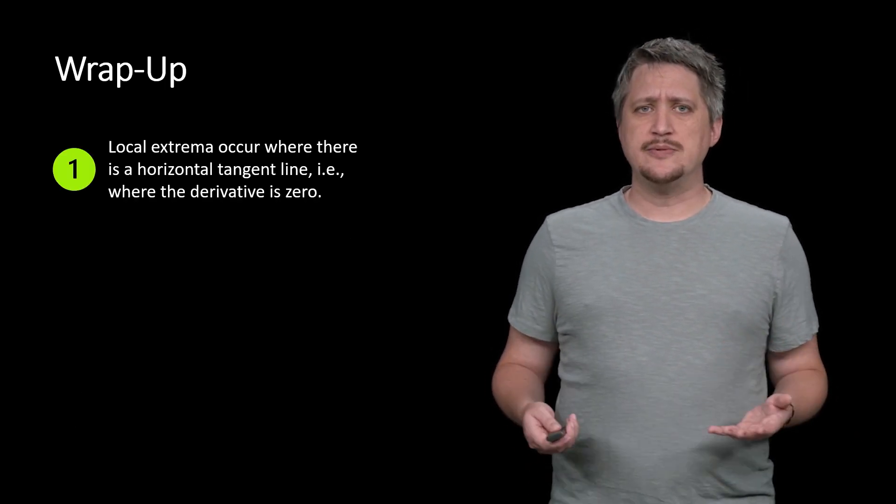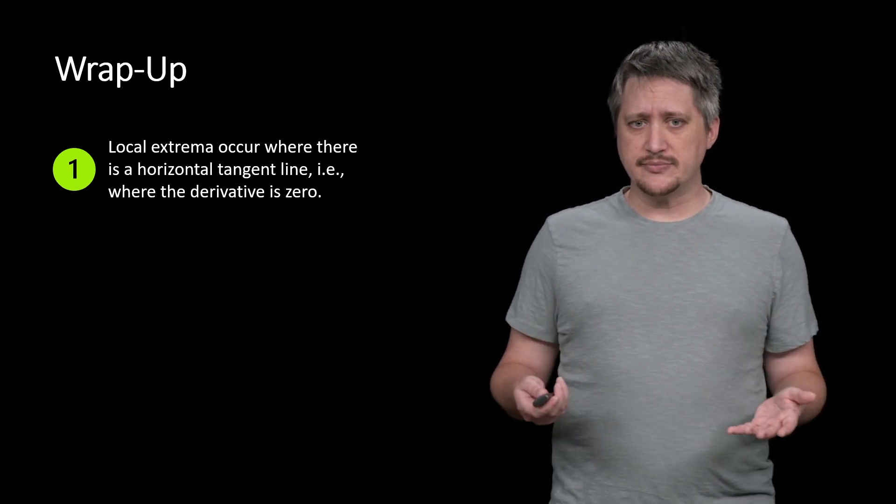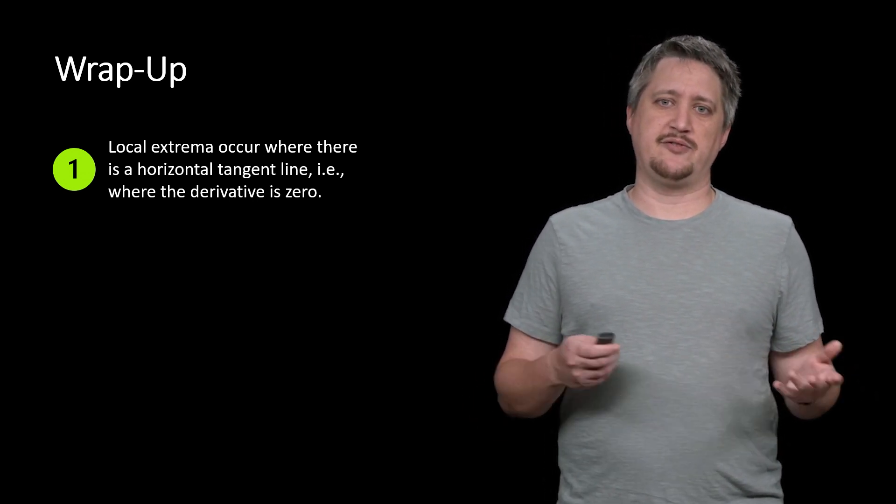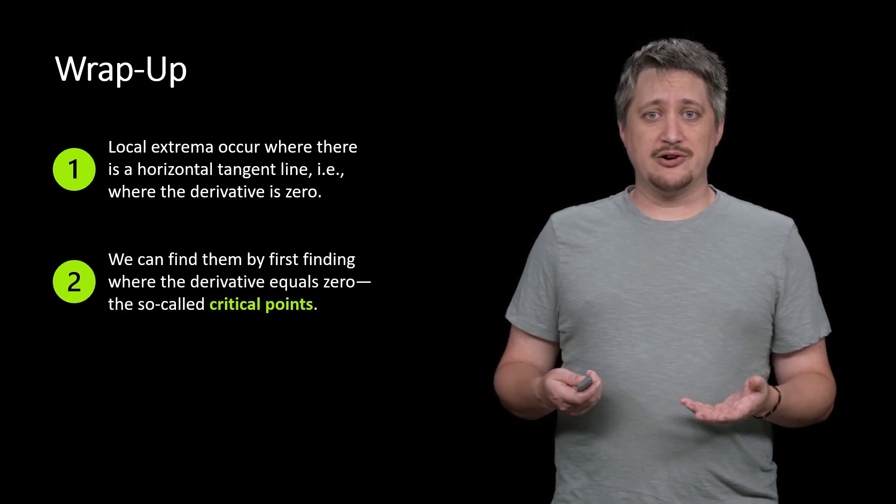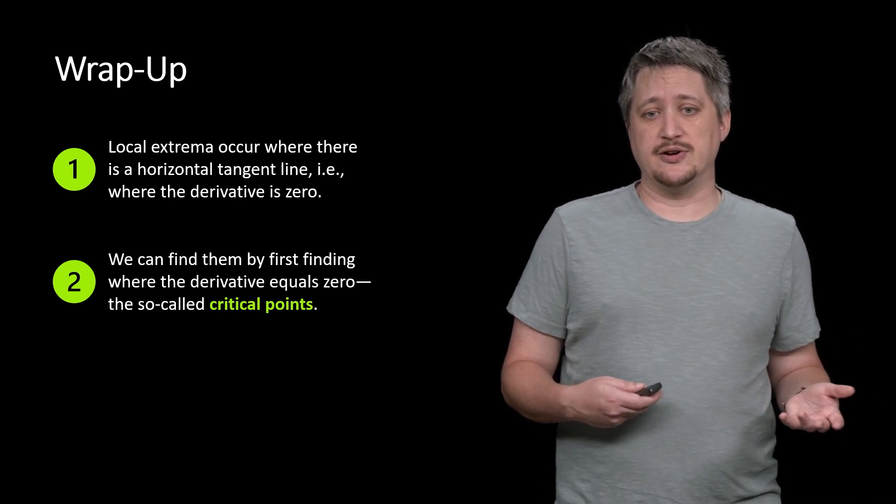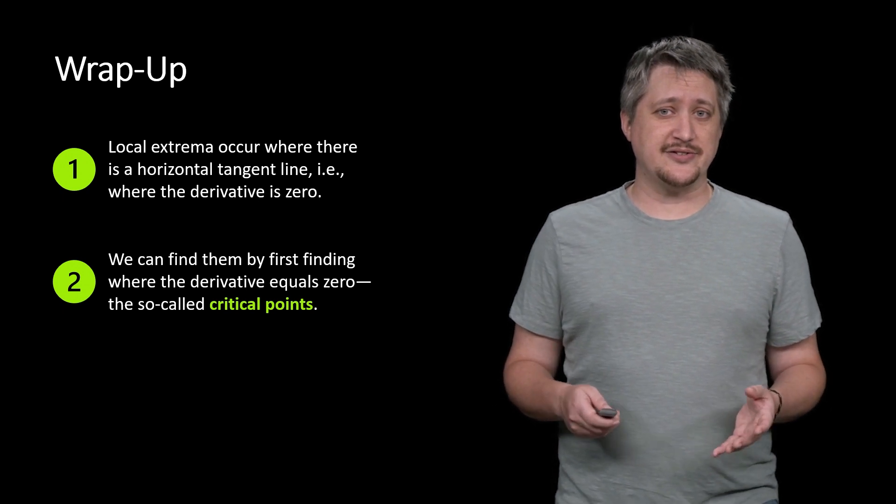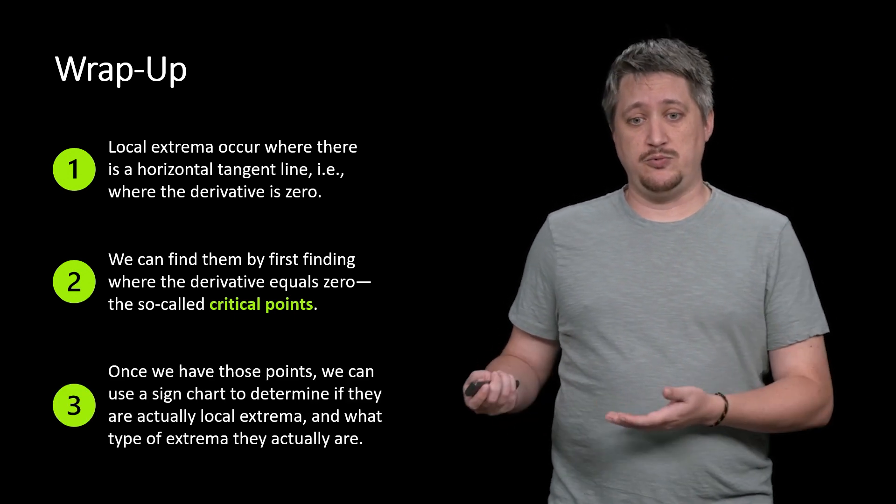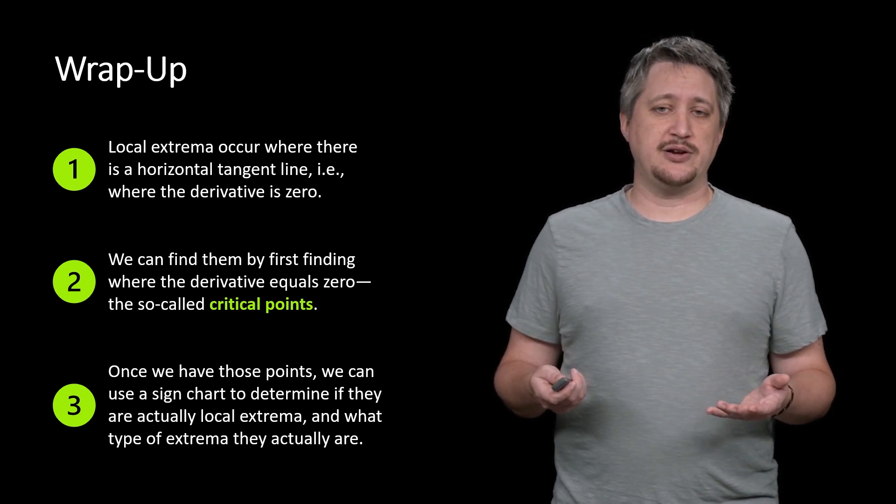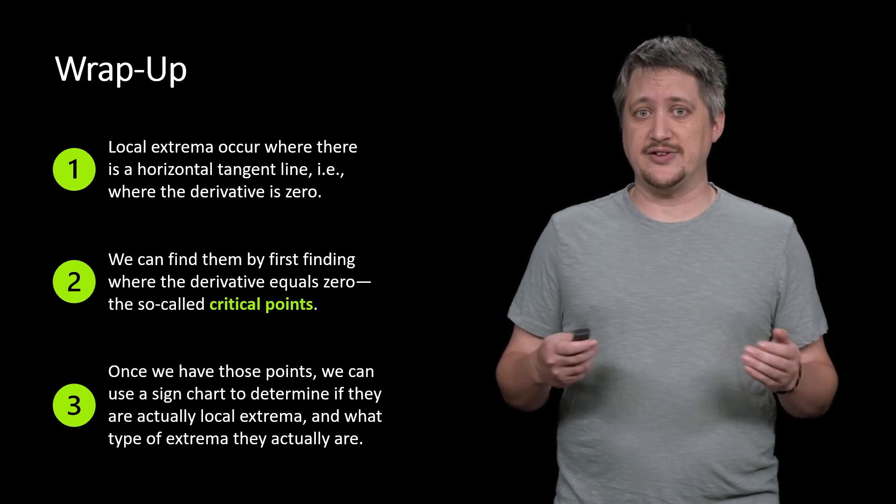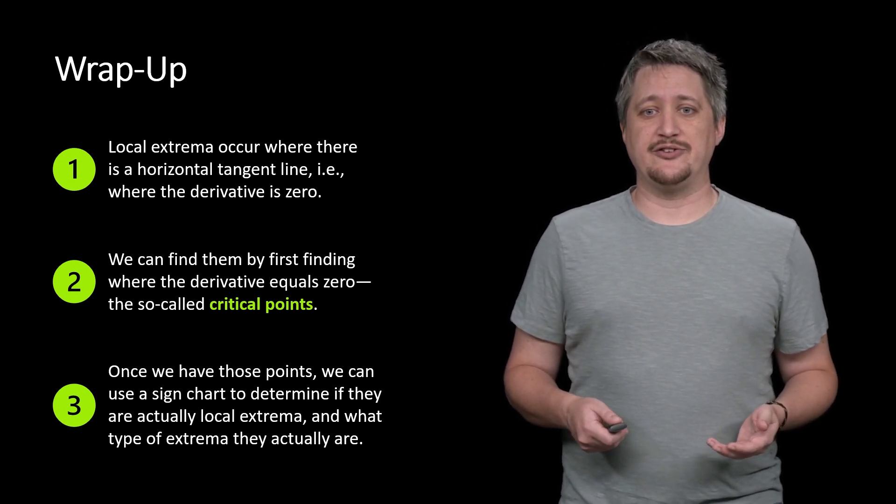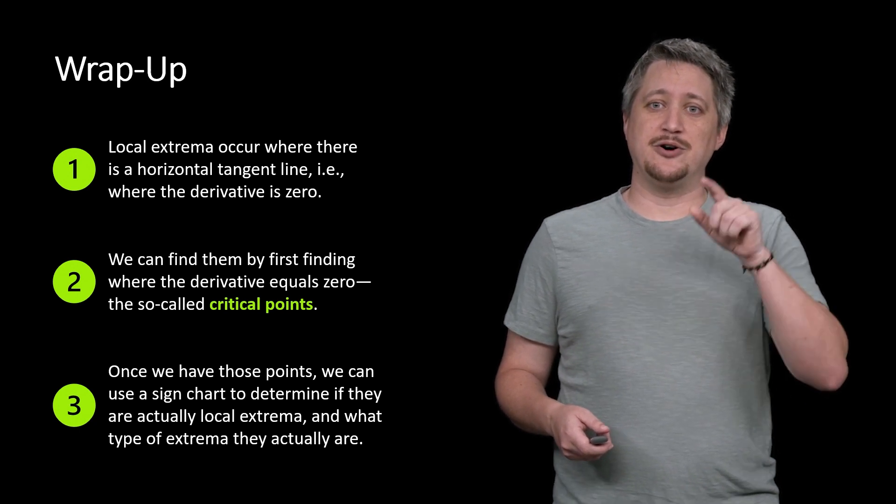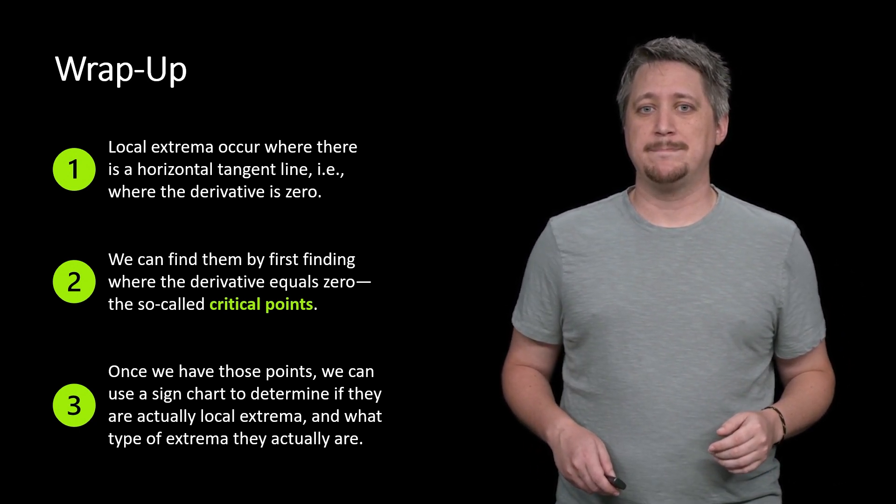Alright, so what do we look at? Local extrema occur where there's a horizontal tangent line. And that means that's where the derivative is zero. And really a little bit more than that - we want to know where it's transitioning positive to negative, negative to positive. But since we know that they occur there, we can find these things by first finding where the derivative is zero. So these are the so-called critical points. Key idea here is that they aren't necessarily extrema. These are just points that have the potential to be extrema. So then we have to go check. We do that by making a sign chart and determining which ones are actually local extrema by looking for the sign change in that sign chart. And that'll also tell us which type they are. If they start going negative, they're going down, and then so they go down and then up, that means it's going to be a minimum. And if they go up and then down, that's going to tell us that it's a maximum.